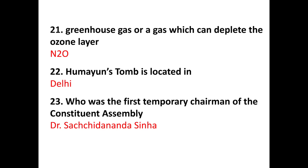The next important question is about Humayun's Tomb. A question can come about its location. Humayun's Tomb is located in Delhi. This is a garden tomb — it is the first garden tomb in India. Humayun was a Mughal emperor, and his tomb is in Delhi.